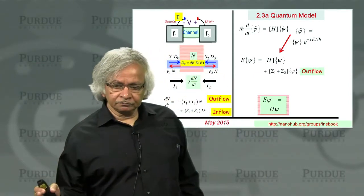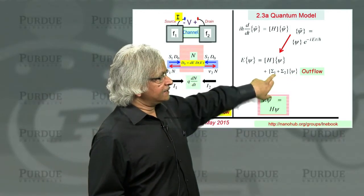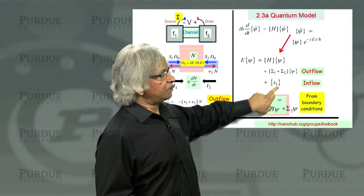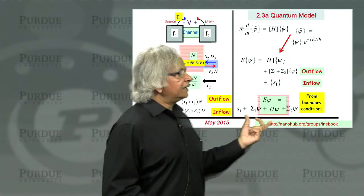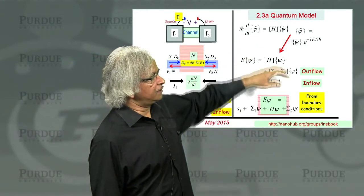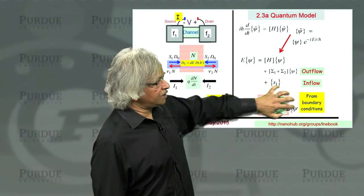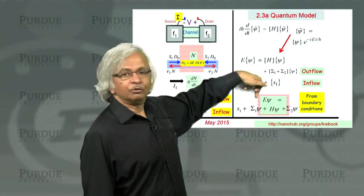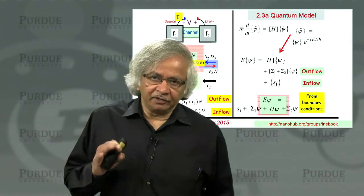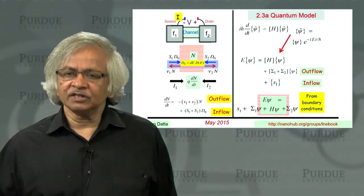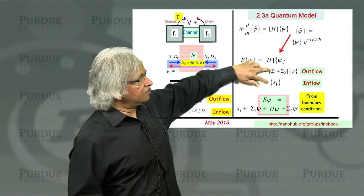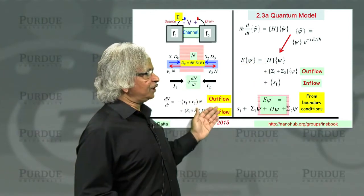What we'll show is that if you add a term like sigma, that corresponds to outflow, and if you add a source term S, that corresponds to inflow. These terms come from the boundary conditions — you say the Schrodinger equation applies everywhere, but we restrict our attention to the device region and apply boundary conditions on the two ends. Those boundary conditions effectively give rise to terms like these. For the moment, all we want to understand is how a term like sigma and a term like S give rise to inflow and outflow.